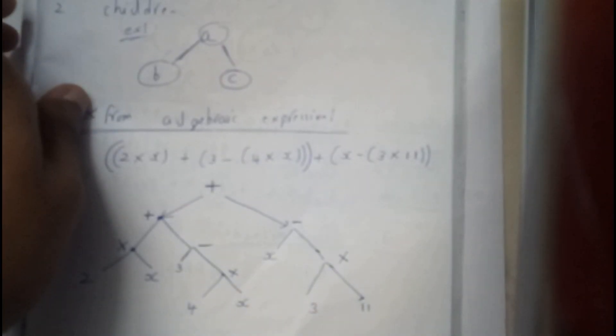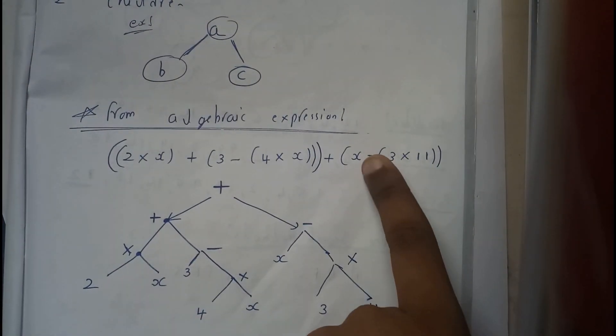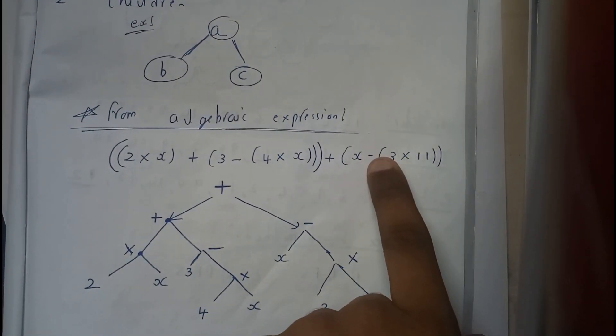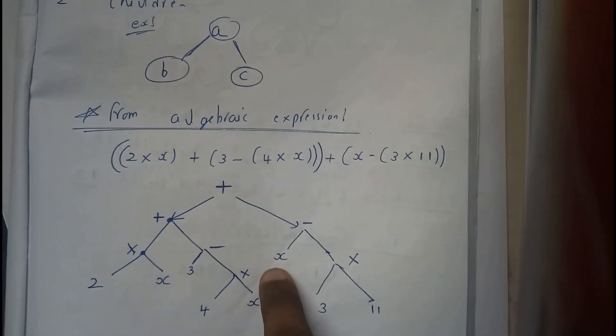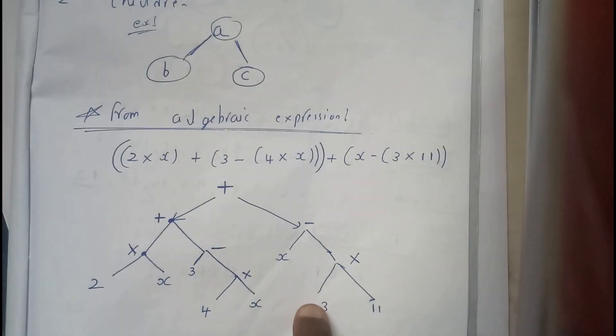On the other hand side, minus is the separator. Minus on the left, X on the right. 3 into 11, multiplication will be separator, 3 on the left and 11 on the right.